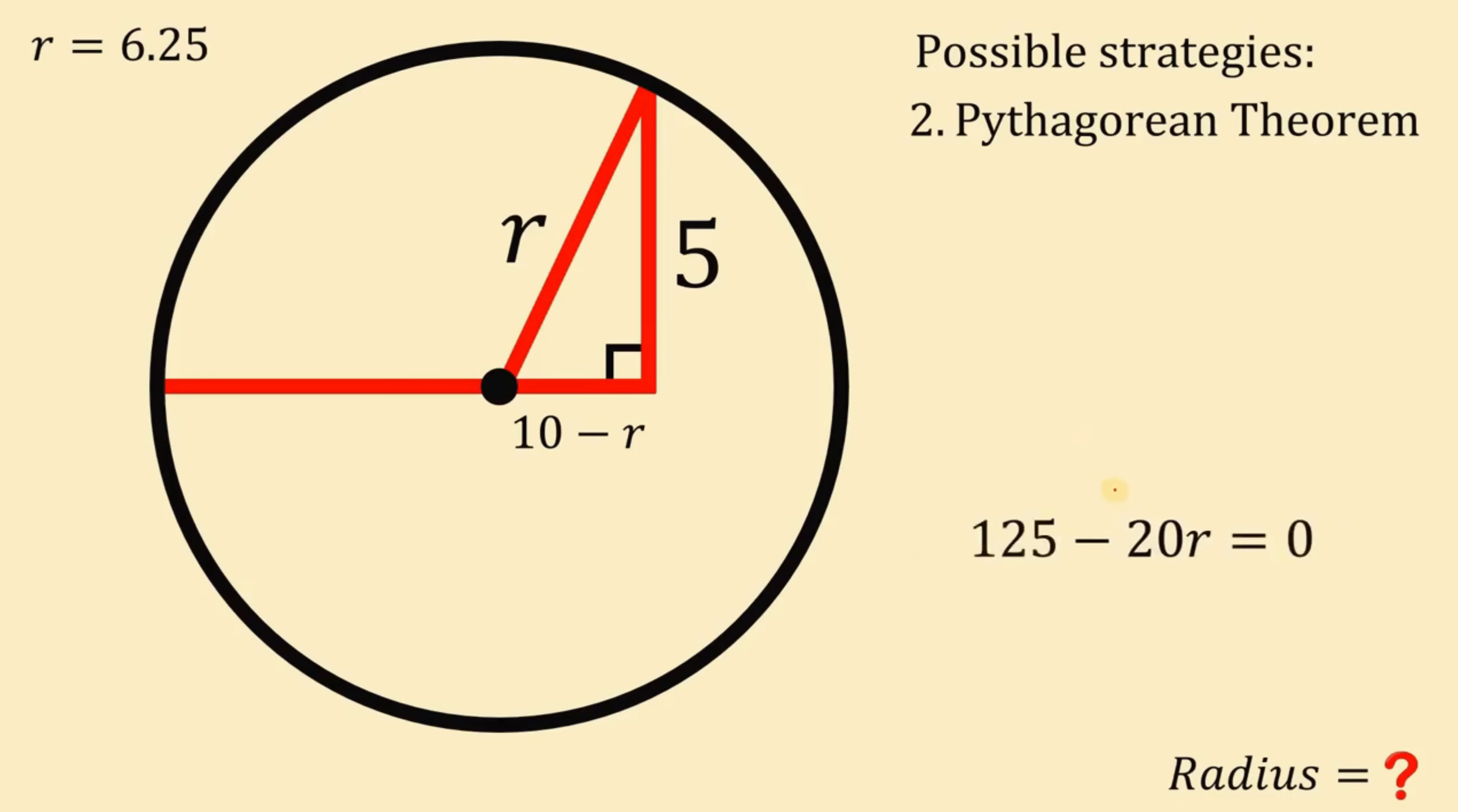Now, let's add 20R on both sides. So we have now 125 equals 20R. Divide both sides by 20. We get that the value of R must be equal to 125 over 20. Now, 125 over 20 must be equal to just 6.25. And that is the value of R we get a while ago.